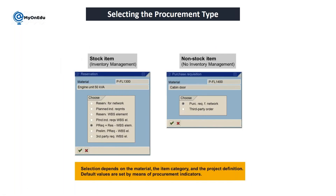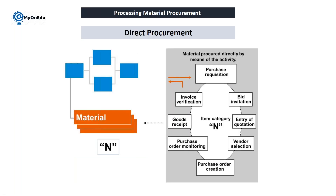When assigning material in the project builder, you get the option to select procurement types. For a stock item you will have options such as: reservation for network, planned independent requirement, reservation for WBS element, planned independent requirement for WBS element, and purchase requisition plus reservation for WBS element. All these procurement types come from the procurement type settings in configuration.